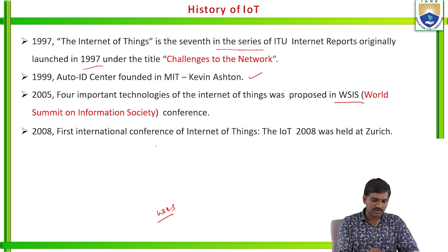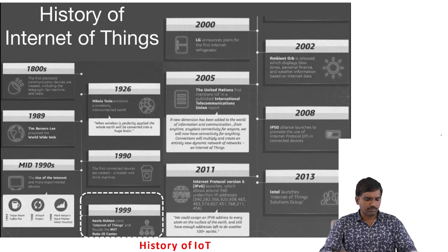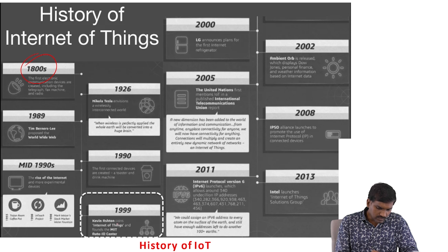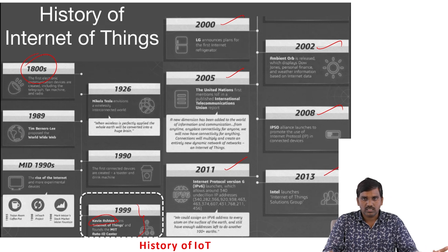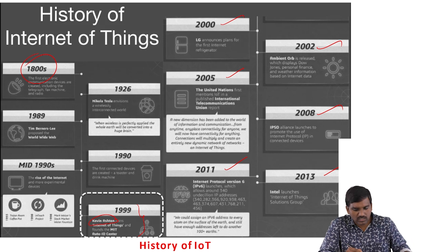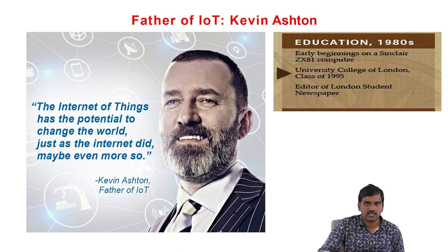In 2012, the first international conference on Internet of Things was held. The history of IoT starts from around 1800, but Kevin Ashton started real-time applications from 2019, developing through 2000, 2005, 2011, 2008, 2013, with data not yet updated for 2024. In 2013, Intel launched the Internet of Things Solutions Group, based on which we can create some IoT projects.